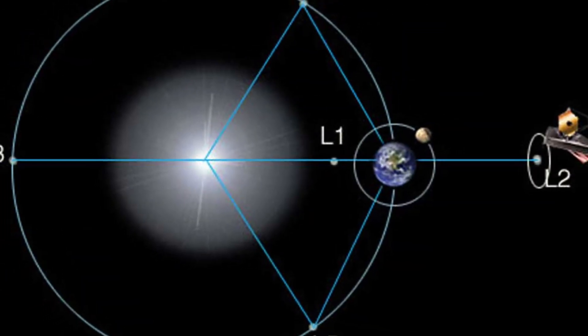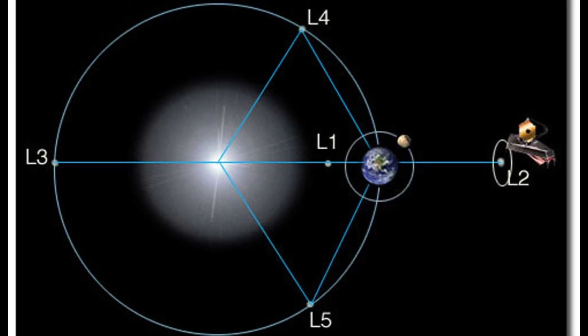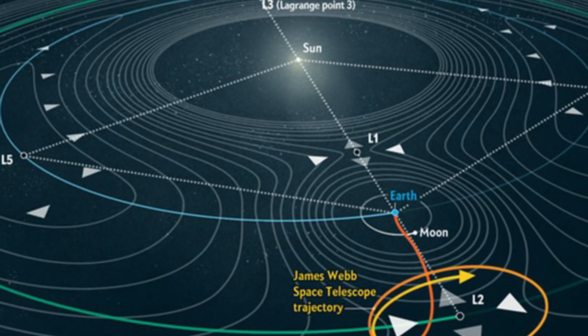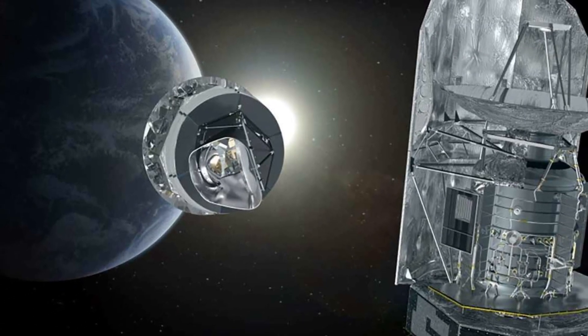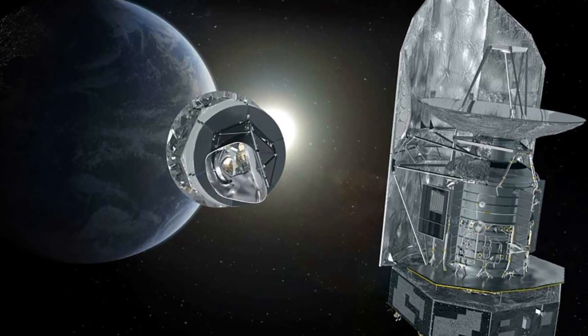L2 is a spot in space near Earth that lies opposite from the Sun. This orbit will allow the telescope to live in line with Earth as it orbits the Sun. It has been a famous spot for many other space telescopes, including the Herschel Space Telescope and the Planck Space Observatory.